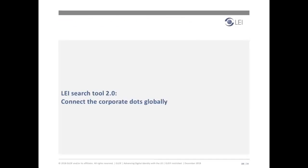Earlier in this webcast, we highlighted that businesses across the globe are grappling with how to develop and implement a common entity identification system to identify financial market participants and connect data. In our view, broad adoption of the LEI is the answer. The Global LEI Index is the only global online source providing open, standardized, and high-quality legal entity reference data. Each LEI contains information about an entity's ownership structure, answering the question of who is who and who owns whom. One of GLEIF's key responsibilities is to provide easy access to this full global LEI repository free of charge via an open data license.